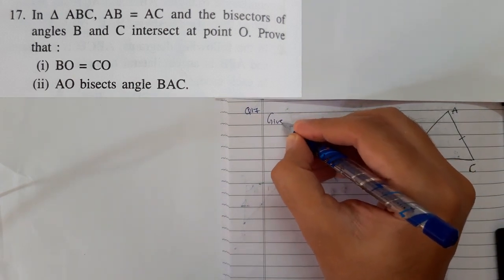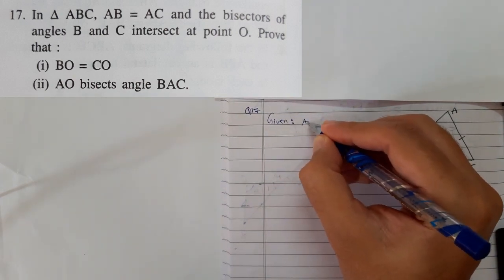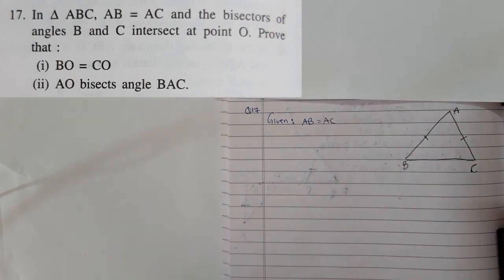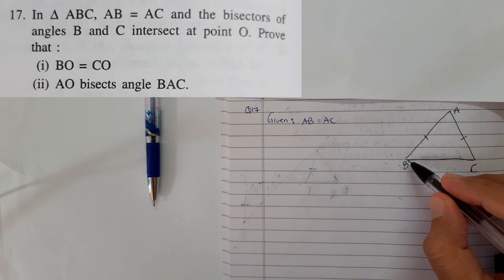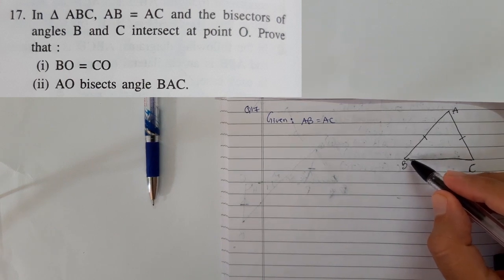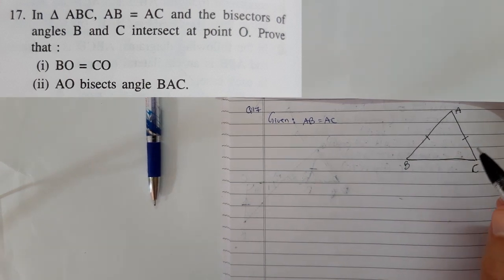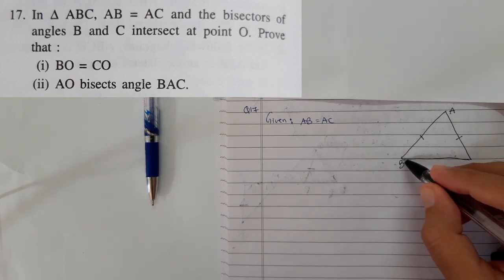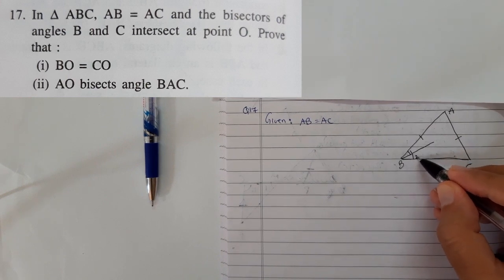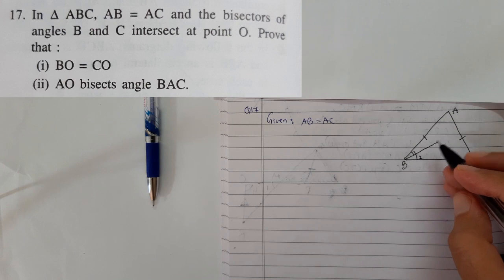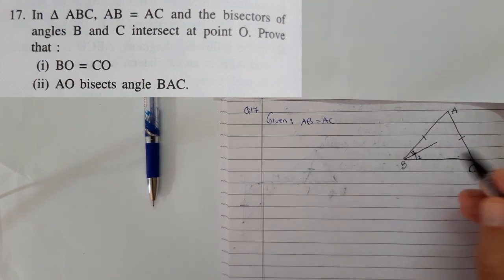In the given section, we can write AB equals AC, and one more thing is that the bisectors of angle B and C are given. We've discussed many times that bisector means dividing into two equal parts. Bisector of angle B means dividing it into equal parts, angle 1 and angle 2. This is angle 1 and angle 2.